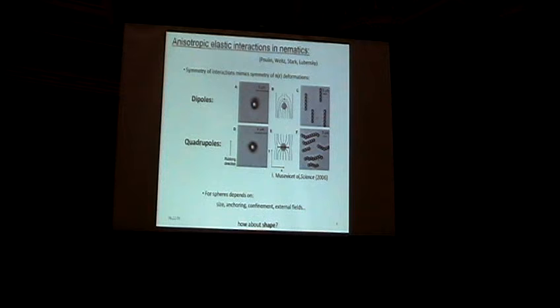you get dipole-dipole interactions that tend to form chains of particles along the nematic director. And if you have the Saturn ring configuration, which is a quadrupolar field, you get quadrupolar interactions. So this is taken from Musevic's group's paper in Science, and this is a really nice piece of work.